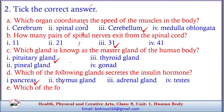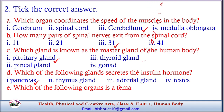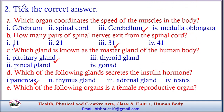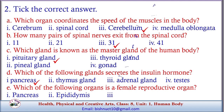E. Which of the following organs is a female reproductive organ? Options: 1. Pancreas, 2. Epididymis, 3. Testes, 4. Uterus. Answer: 4. Uterus.